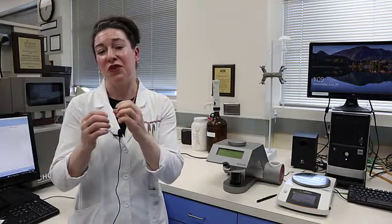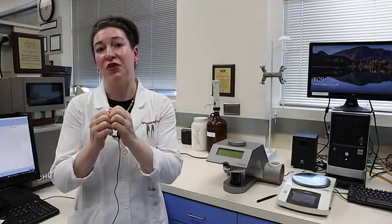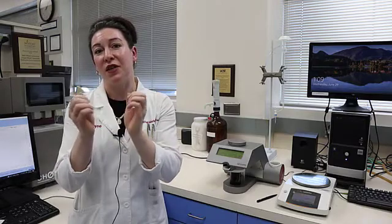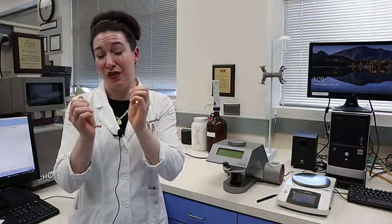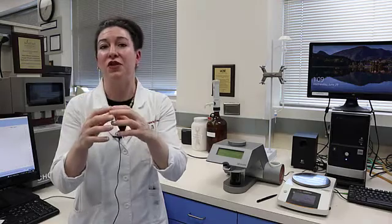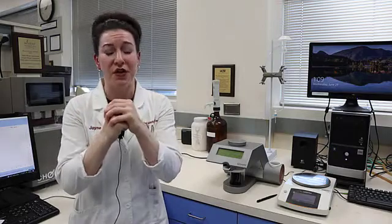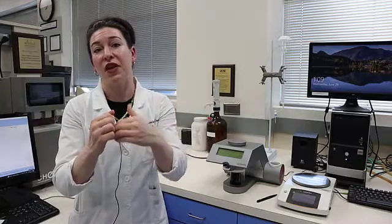With soft wheat kernels, that protein matrix isn't very strongly adhered to the starch granule, and so when you mill it, you can basically separate along the line between the starch granule and the protein matrix, and so you don't really see a lot of starch damage. With a harder wheat kernel, that protein matrix is very tightly adhered to the starch granule, and so in order to separate the endosperm up into flour particles, you sometimes physically have to break through the starch granule, and that's what creates damaged starch.